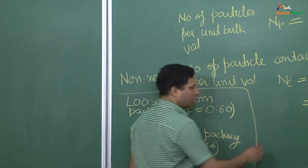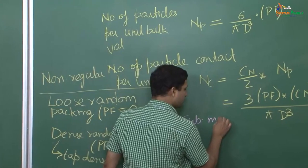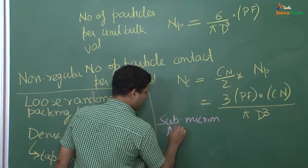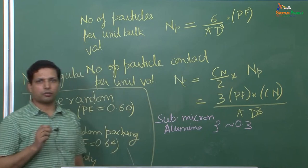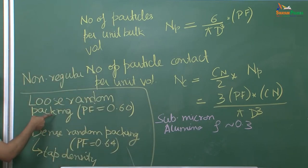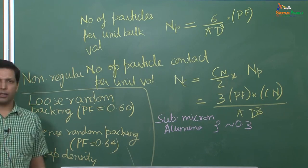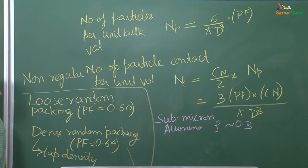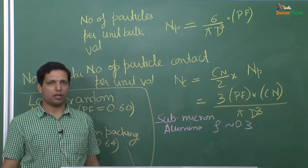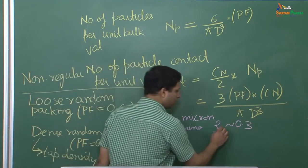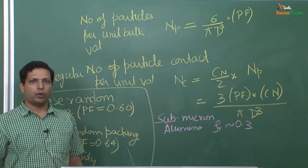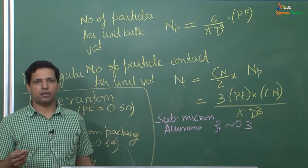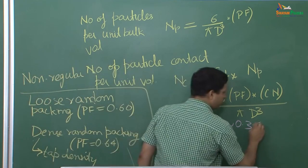If I tell you that for a sub-micron alumina the relative density you get is of the order of 0.3 — what would your thoughts be? We said that usually you should get 0.6 for loose random packing when you have not tapped it, and close to 0.6 for dense random packing when you have tapped it. So why are we getting 0.3 for sub-micron alumina powders? You have to remember that when the particle size reduces, agglomeration occurs — this is because of agglomeration.